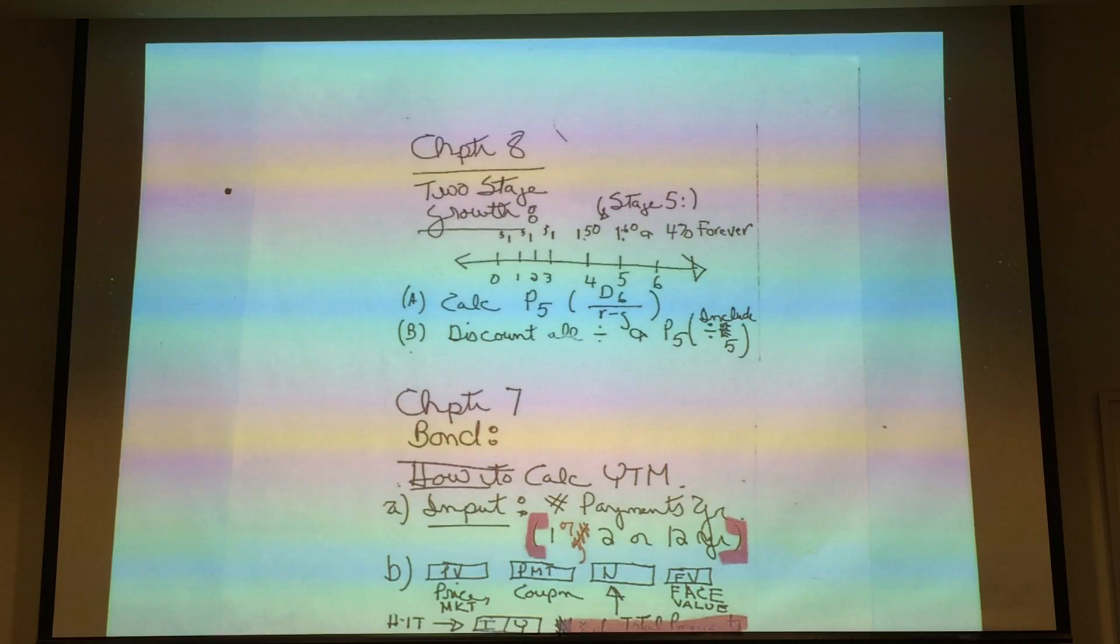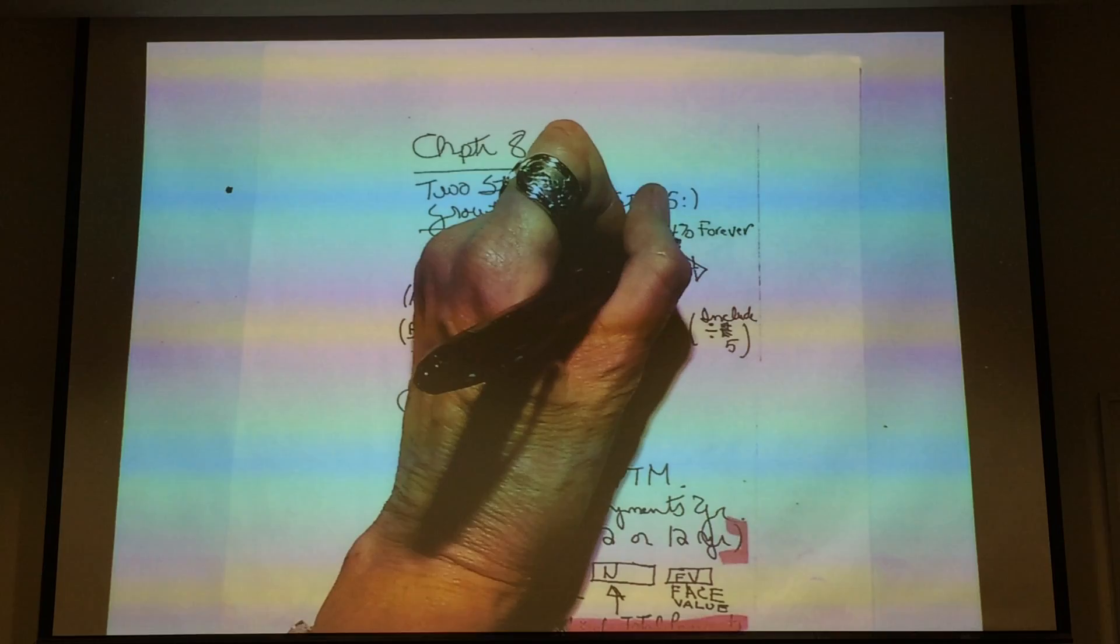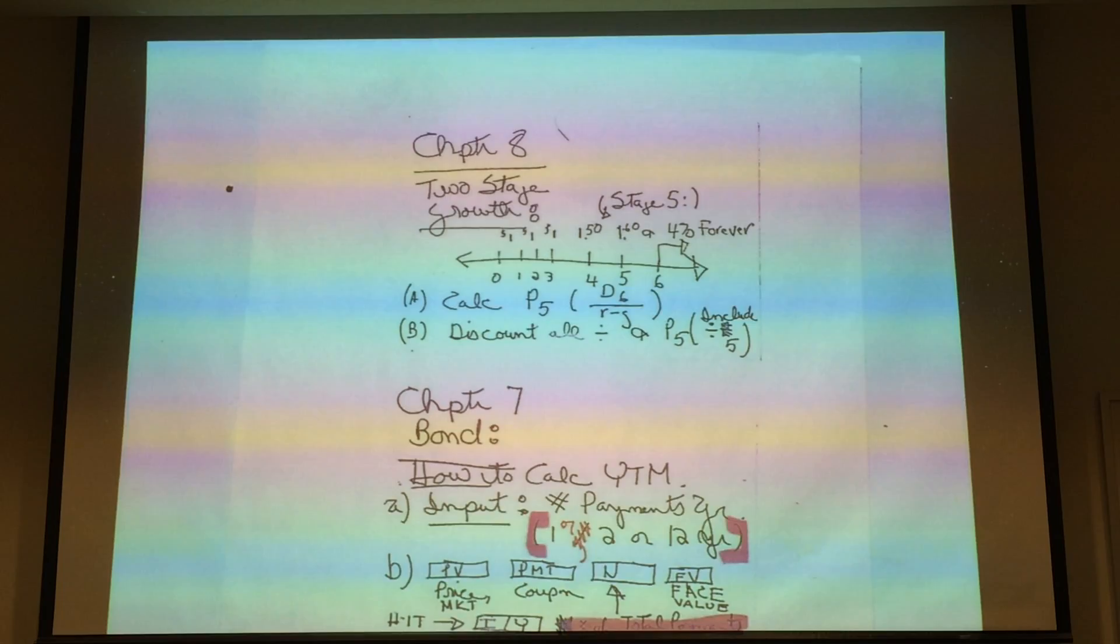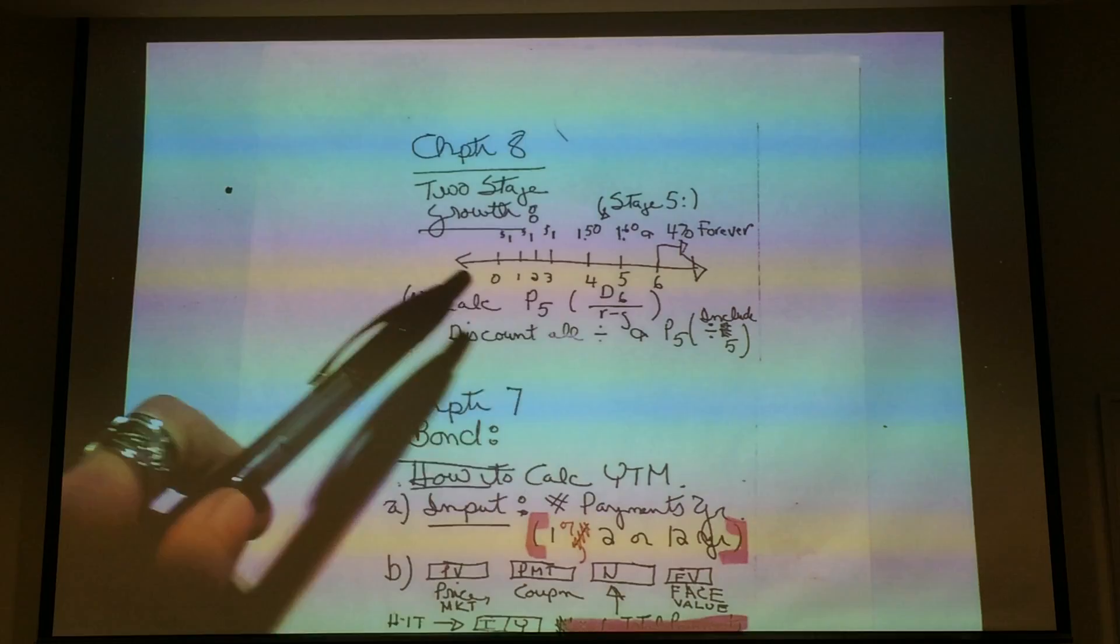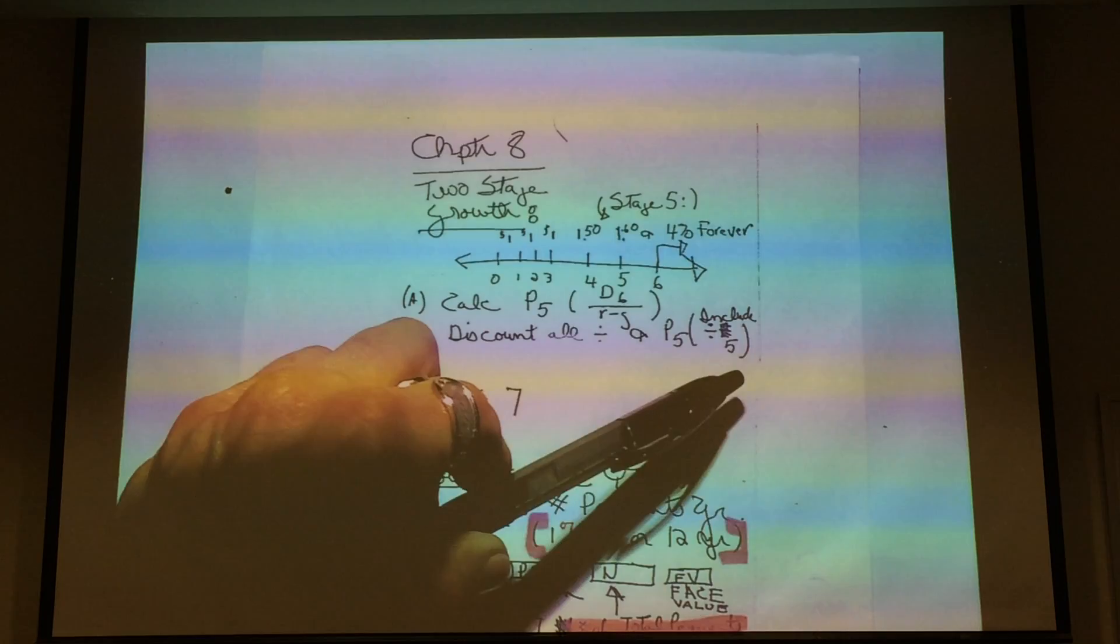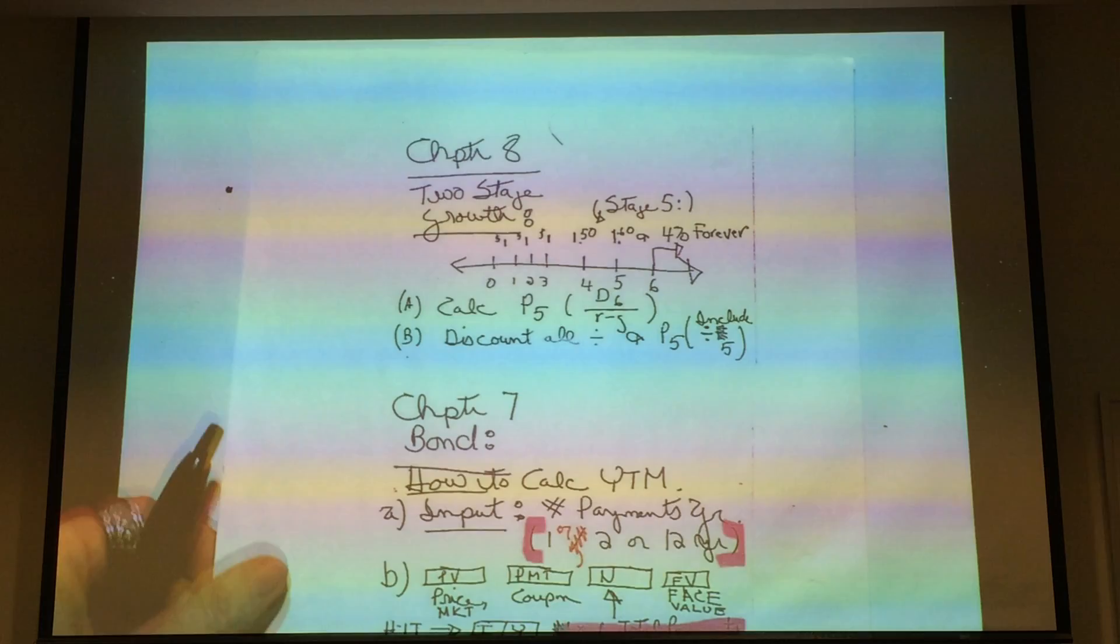Then, you have to discount the stock to what it's worth now, P0. So in this case, growth forever starts at P5. If P5, you're going to have a stock that grows forever at 4% at period 6, time period 6. That means you can step back one period, figure out what the price is at P5, then put all your dividends and P5 into your calculator and your cash flows, discount it back to zero to give me the price of the stock. We'll go through an example of that too.